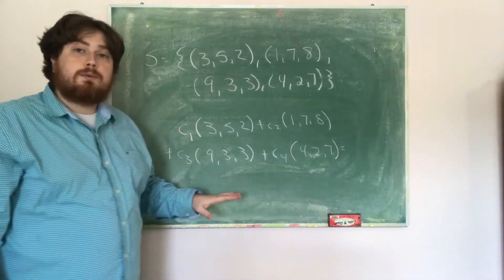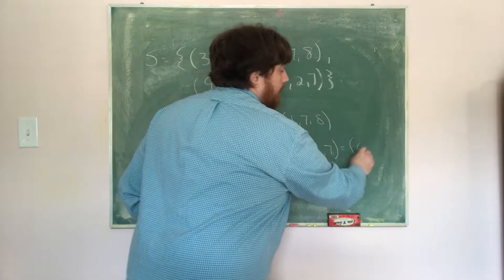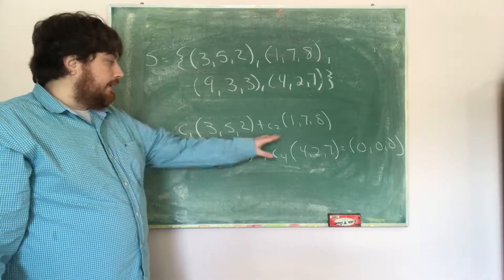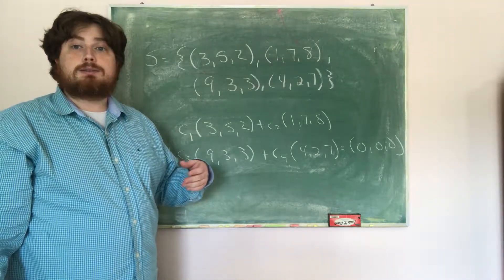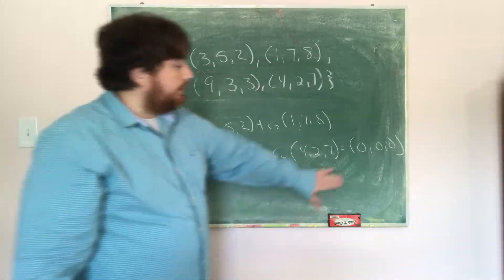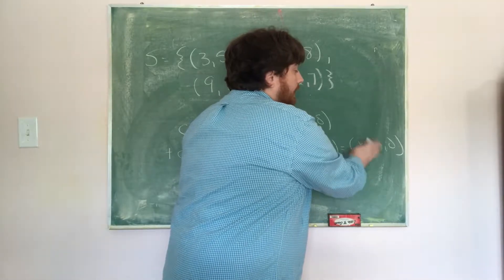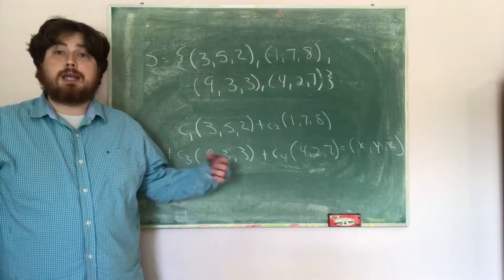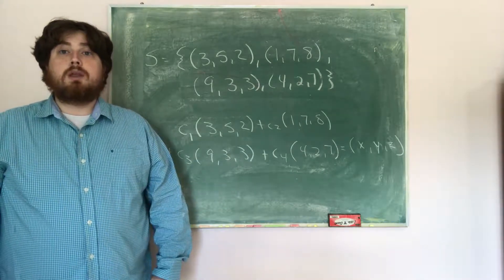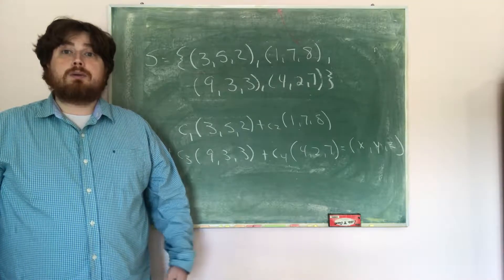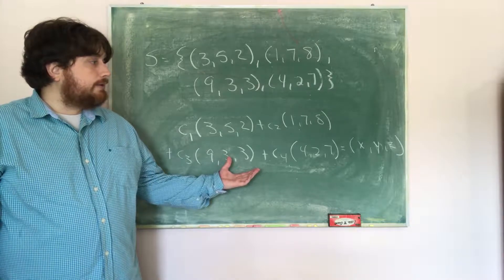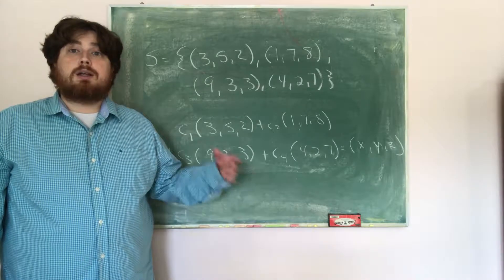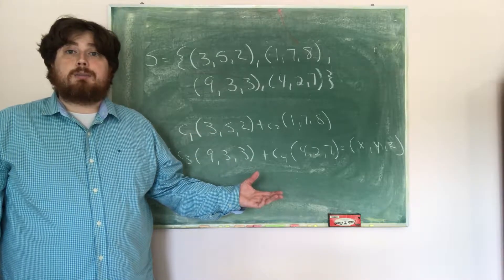Now, if we want to check for linear independence, we're going to set this equal to the zero vector and ask: is the only solution that each of the constants is zero? If that's not the case, then it's linearly dependent. If we're checking for spanning, we let these equal arbitrary elements of R and ask does this have a solution for each x, y, and z. To answer both questions, we turn this into a matrix equation and use row reduction.